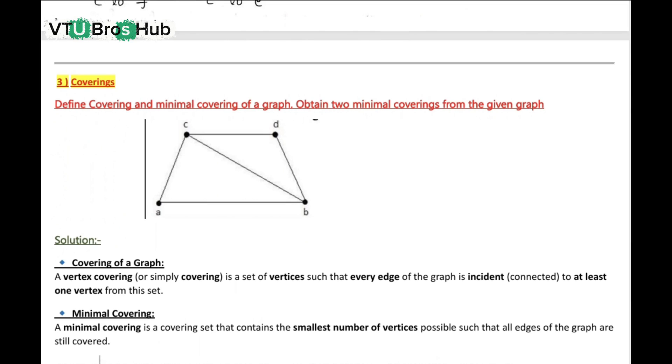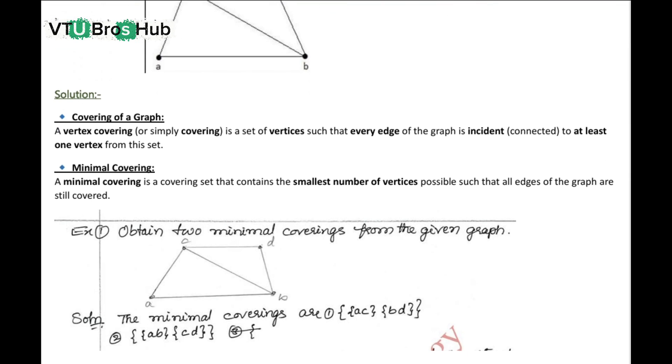Define covering and minimal covering. What is a covering in graph theory? A covering is a set of vertices such that every edge is connected to at least one of them.